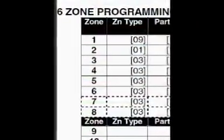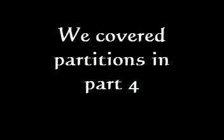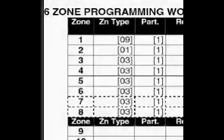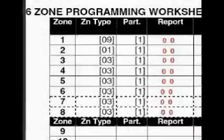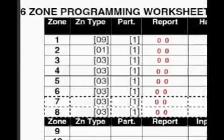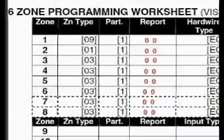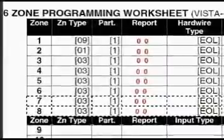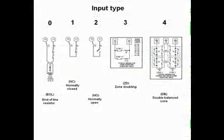Moving on to the next column, we have partitions — you can select one, two, or both, which we covered in part 4. After partitions we move over to report codes. Report codes are the information that your alarm will send back to the home office if you have a monitored system. Since we're going to do our own monitoring, we don't need report codes — clear the codes out by entering zero. The next column is going to require a little more discussion: that will be hardware type. You need to tell the VISTA panel how you've electrically wired your sensors so the panel can interpret what it's seeing at the other end.